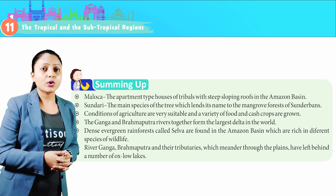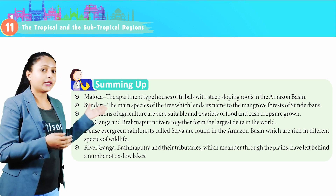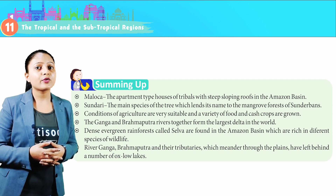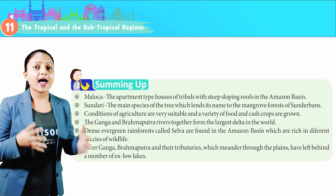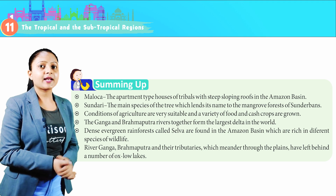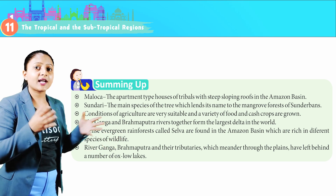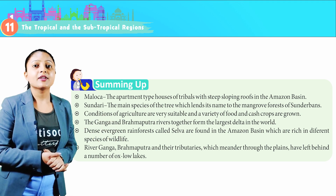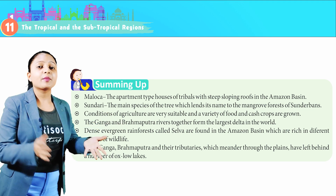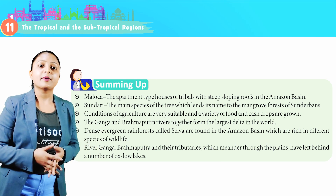Summing up this chapter: Maloca — the apartment-type house of tribals with steep sloping roofs in the Amazon Basin. Sundari — the main species of tree which lends its name to the mangrove forests of the Sundarbans. A variety of food and cash crops are grown in the Ganga-Brahmaputra Basin. The Ganga and Brahmaputra rivers together form the largest delta in the world. Dense evergreen rainforests called Selva are found in the Amazon Basin, rich in different species of wildlife. Rivers Ganga, Brahmaputra and their tributaries, which meander through the plains, have left behind a number of oxbow lakes. Thank you class, let's meet in the next class.